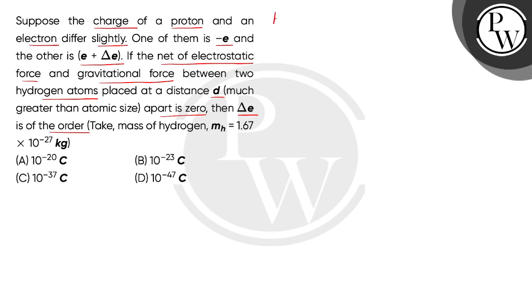First of all, we will consider the question according to hydrogen atom. Now, the charge on one particle - because proton and electron both charges slightly differ according to the question - so the charge on one is minus E and the other charge is E plus del E. So we will get the net charge of del E.